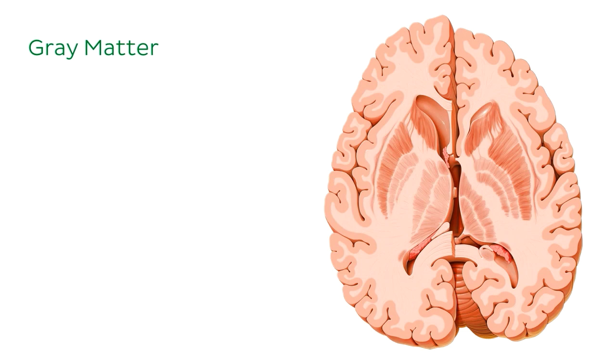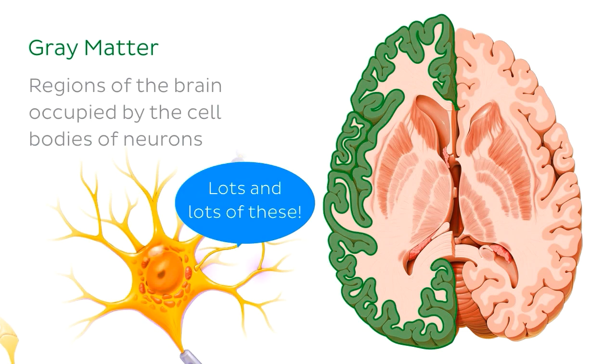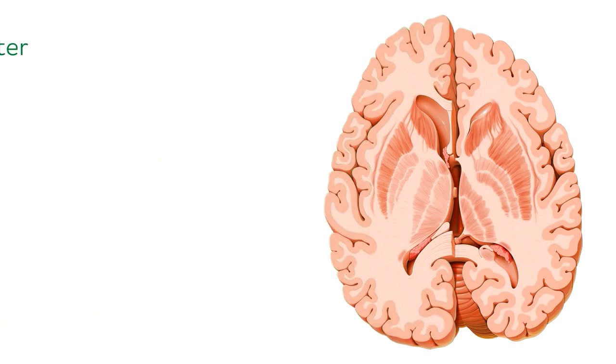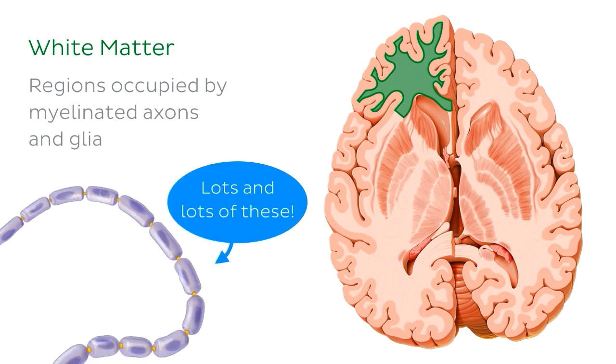So you might remember that grey matter refers to the regions of the brain occupied by the cell bodies of neurons, and these regions appear in a slightly darker pink color in the cross-sections. The white matter refers to the whiter regions you can see where neuronal axons are often covered in lipid-rich sheaths of myelin, which appears white when fresh.